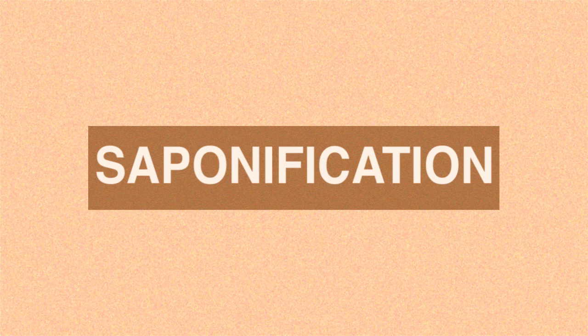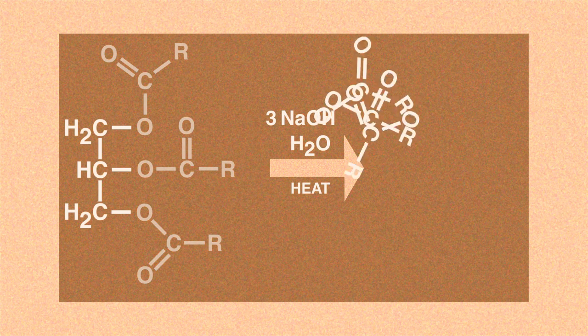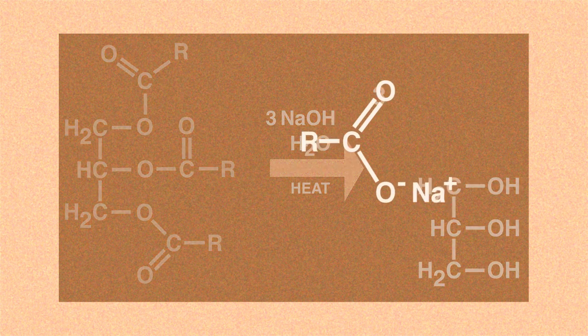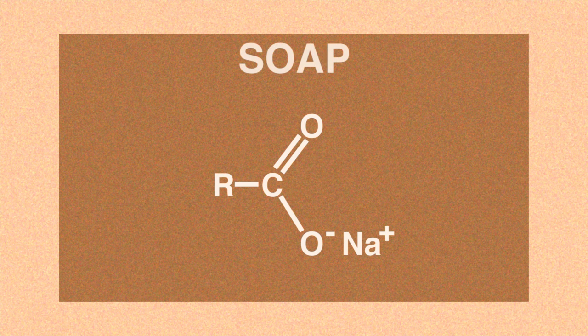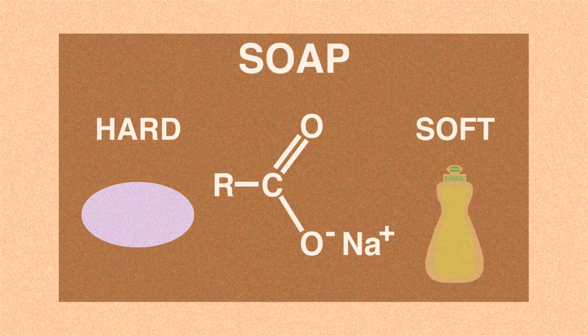In summary, soaps are made by a process called saponification. This is a hydrolysis reaction whereby a fatty acid ester bond is broken and a carboxylate salt and glycerine are formed. That carboxylate salt is the soap that we use when we wash, and can be hard — as in a bar of soap — or soft, like that found in a hand wash.